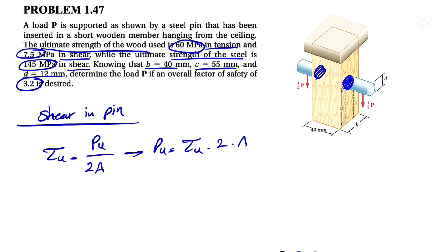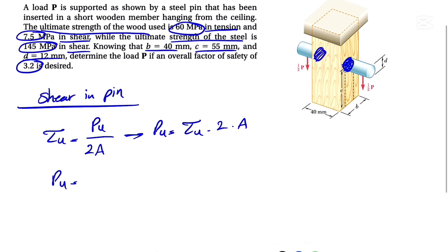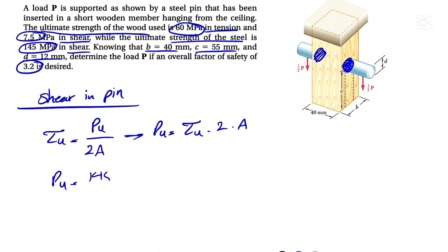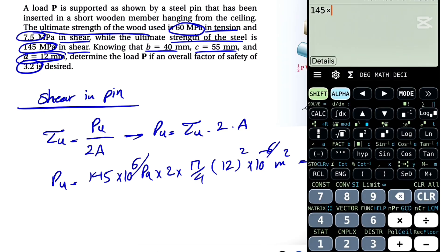So if we want to find Pu, we basically have the shear times 2 times A. We have the ultimate shear in the steel pin, which is 145 megapascals or 145 times 10^6 pascals, times 2. The area is pi over 4 times d squared. Our d is 12 millimeters, so 12 squared in millimeters squared, and we're going to have 10^-6 in order to get it in meters squared.